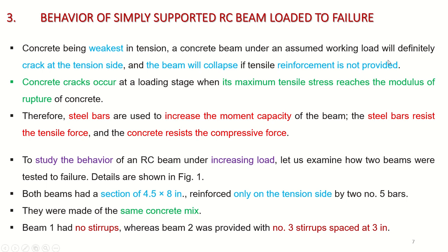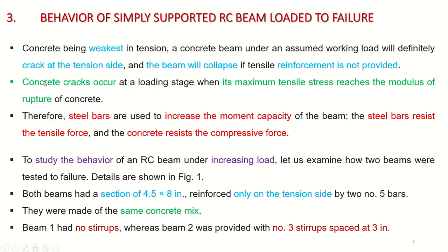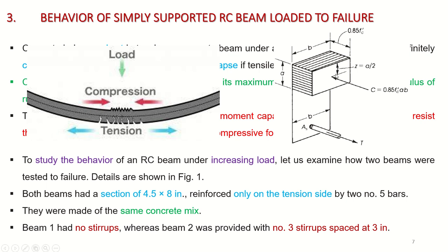A concrete beam under an assumed working load will crack at the tension side and collapse if tensile reinforcement is not provided. Concrete cracks occur when the maximum tensile stress reaches the modulus of rupture. Steel bars are used to increase the moment capacity: steel resists the tensile force and concrete resists the compressive force. In the final stress distribution, the concrete block resists compression while only the steel at the bottom resists tension.